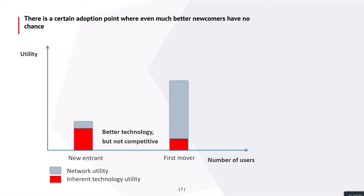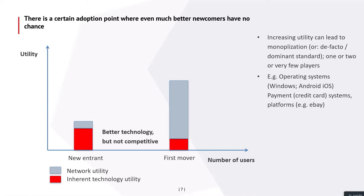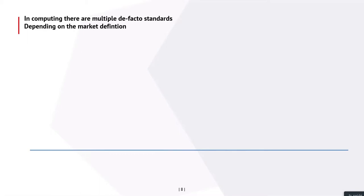If the first mover continues to grow and even better new entrants come to the market, they all fail because their network utility is lower. That could lead to the first mover's leading technology becoming a dominant standard. Increasing utility can lead to monopolization — a de facto standard, a dominant standard with only one, maybe two, or very few players in niche markets. Good examples are computing operating systems, payment systems, and platforms like eBay.